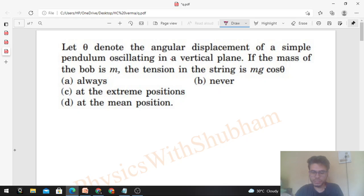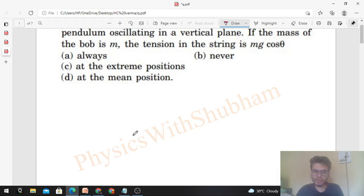in the string is mg cos θ. You have to tell when the tension equals this. A simple pendulum oscillating in the vertical plane - you have a pendulum, and it's oscillating in the vertical plane, so it's actually moving